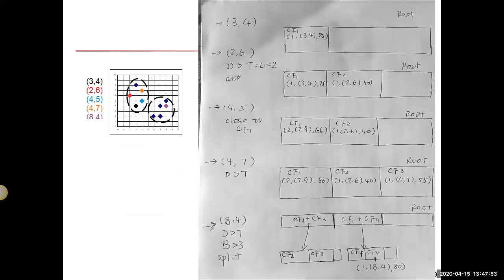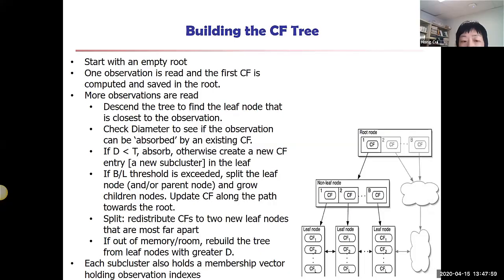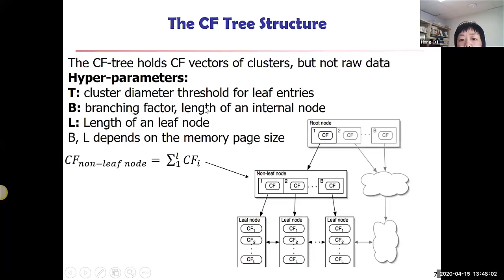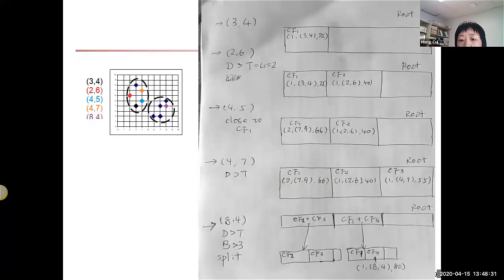We have branching factor—the length of internal node and length of leaf node. Those are parameters the user needs to set. Our idea is to build this tree in memory, so we need each node to fit on a page size. There has to be a limit in terms of how long this list can grow. In this example, we have set the threshold to be three—only three CFs can be held on the root.